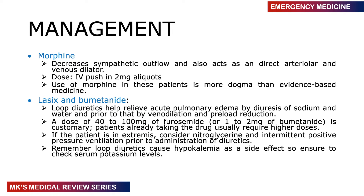Begin with morphine, which decreases sympathetic outflow and causes both arterial and venous dilatation — reducing afterload and preload respectively, both beneficial for a decompensated heart. Give an IV push of 2 mg aliquots. Note that the use of morphine in these patients is more dogma than evidence-based medicine, as the evidence supporting it is limited. Then give a diuretic — Lasix or bumetanide. Loop diuretics relieve acute pulmonary edema by promoting sodium and water excretion, while venodilatation reduces preload and cardiac workload.